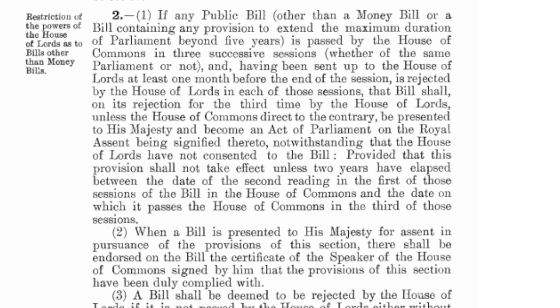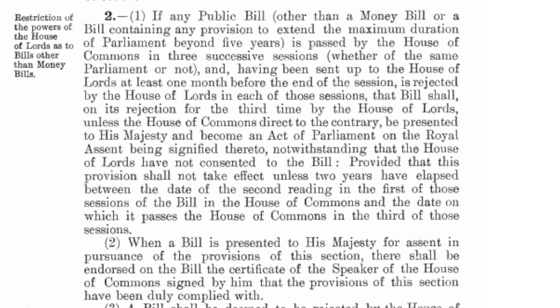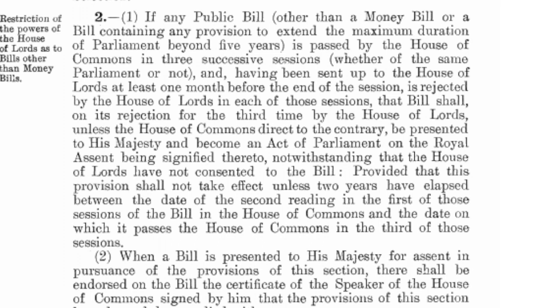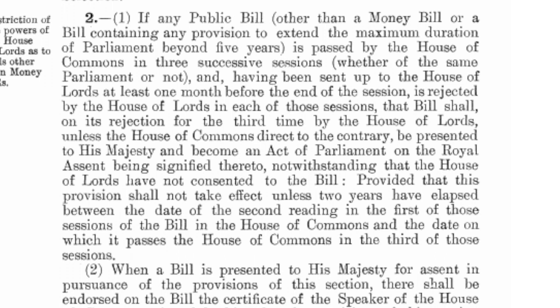Now let us turn in more detail to section 2 of the Parliament Act 1911. This deals with bills other than money bills. A bill, incidentally, is legislation which has not been passed by Parliament; when it passes all its stages and receives Royal Assent, that is when we call it an Act. Section 2 in its original form says that if a bill is passed by the House of Commons in three successive parliamentary sessions and is rejected by the House of Lords in each of those sessions, then after it is rejected for the third time it can be sent for Royal Assent notwithstanding that the House of Lords have not assented to it. What this means is that the power that the House of Lords once enjoyed to veto legislation outright had become a power to delay legislation for two years or a little longer depending on the parliamentary calendar.